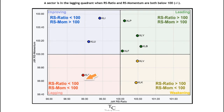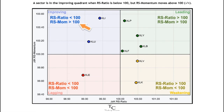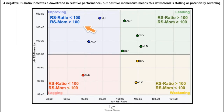A sector is in the lagging quadrant when RS ratio and RS momentum are both below 100. A negative RS ratio indicates a downtrend in relative performance, and negative momentum means this downtrend is still pushing lower. A sector is in the improving quadrant when RS ratio is below 100, but positive momentum means this downtrend is stalling or potentially reversing.